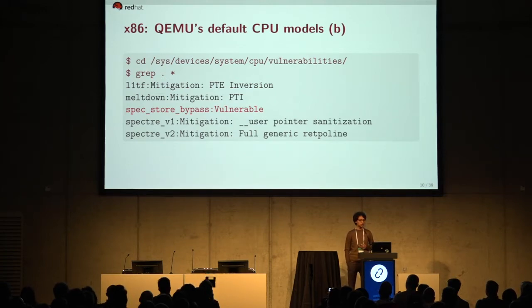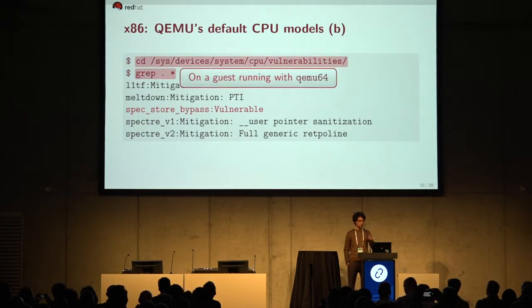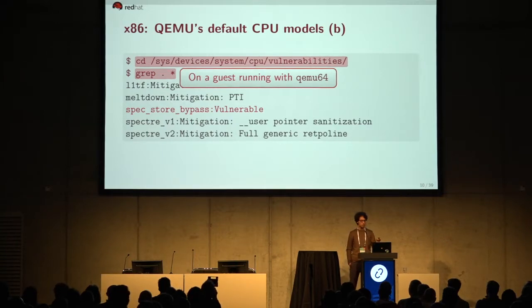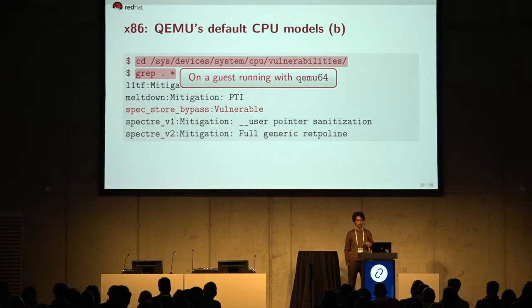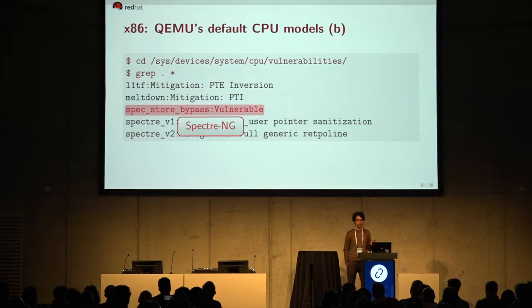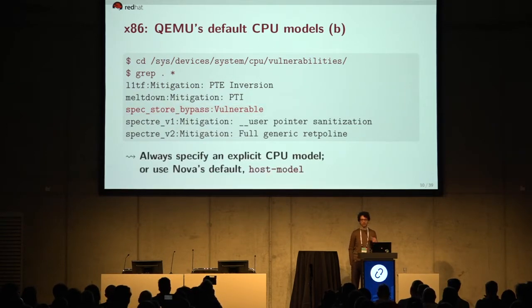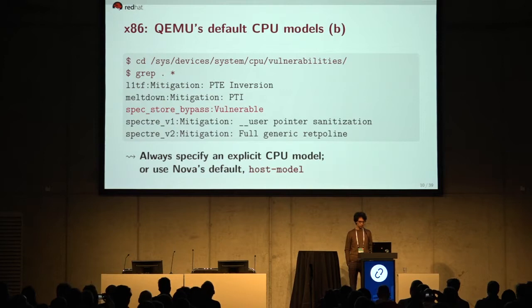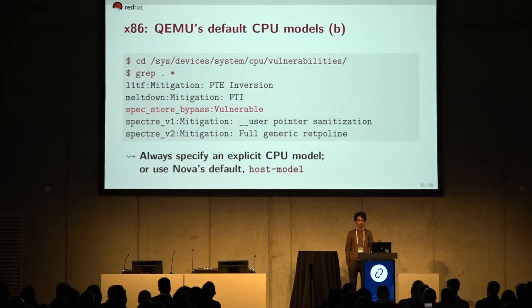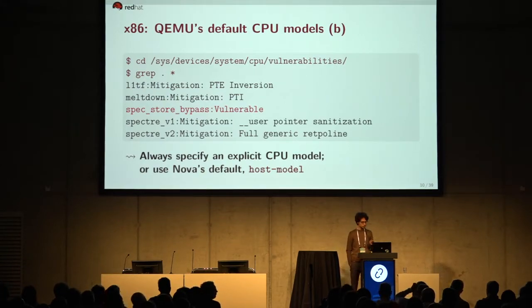Here's output from a virtual machine launched with the default QEMU64 CPU model. If you traverse the sysfs directory at /sys/devices/system/cpu/vulnerabilities and grep for mitigations, you still see it's vulnerable to a variant of Spectre. The point is you don't want to use default CPU models at all if you care about performance, let alone security. Always try to use an explicit CPU model if you know your CPUs, or use Nova's default, which is the host model — we'll see what that is in a bit.